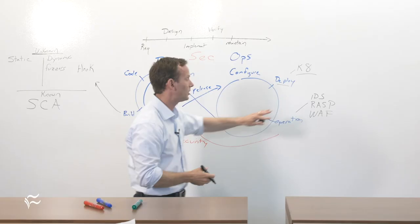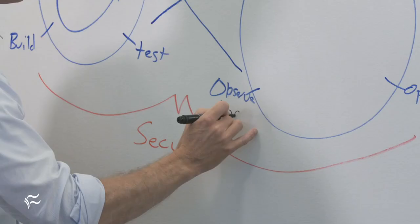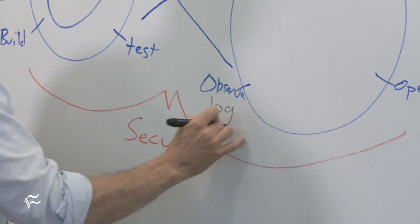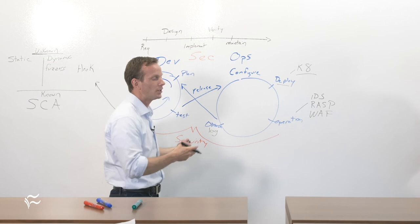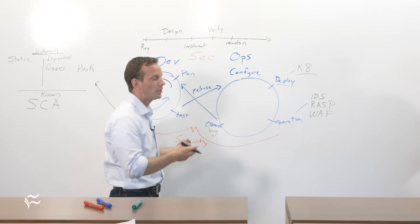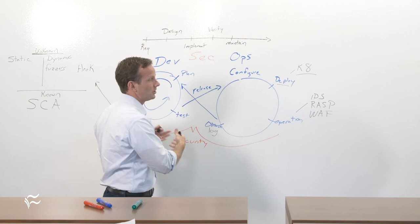On the observation side you get into things like log management. Now god forbid you get compromised one of the things you're going to want to do is quickly react, figure out what's compromised so that you can take action. And so logging infrastructures are a big deal here you may not think of these as security you may be thinking about these for how do I see what pages people are visiting but when an incident happens you'll be very thankful you have them.